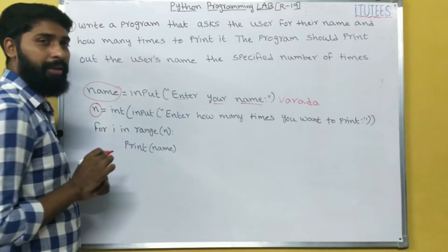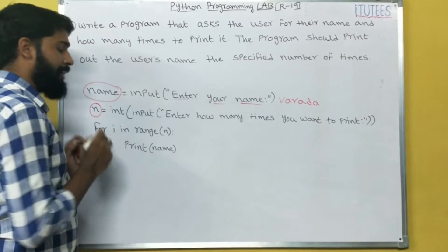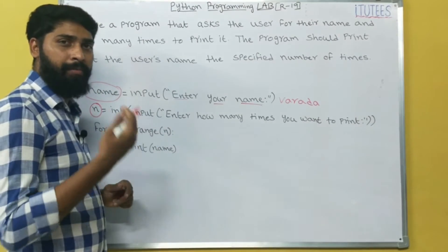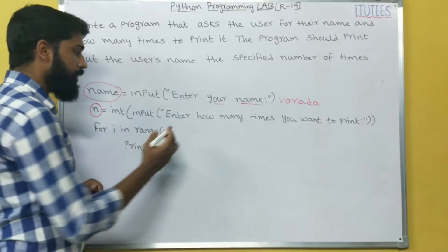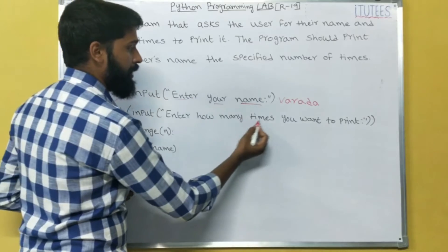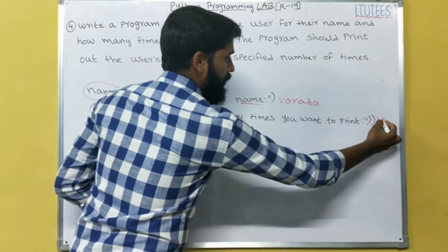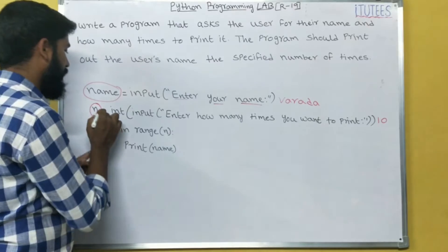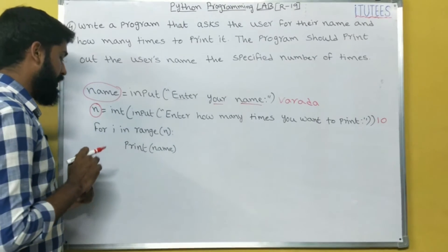So Varada is stored in this name. Now, n equals to, I want to print my name 10 times. Then here, on screen, it displays enter how many times you want to print. I give 10 as an input. Now, the 10 is stored in n.